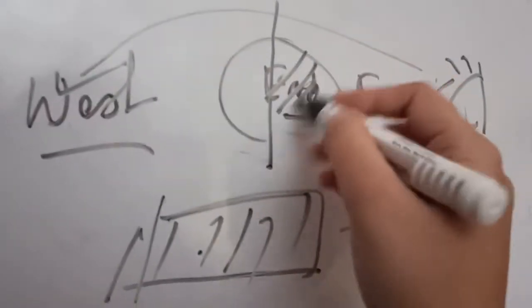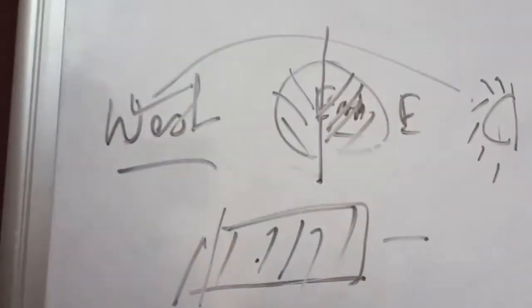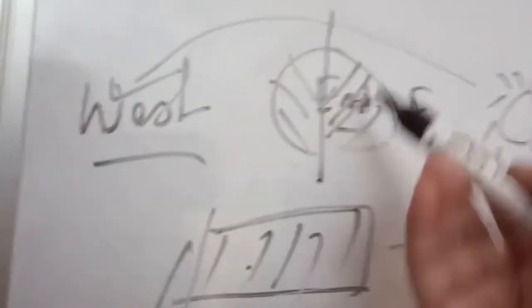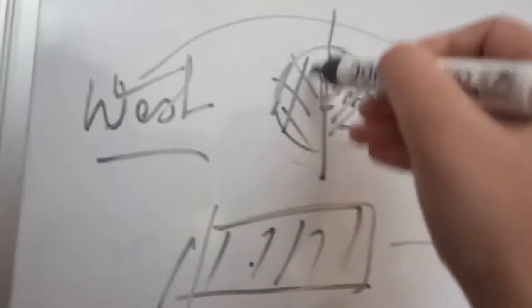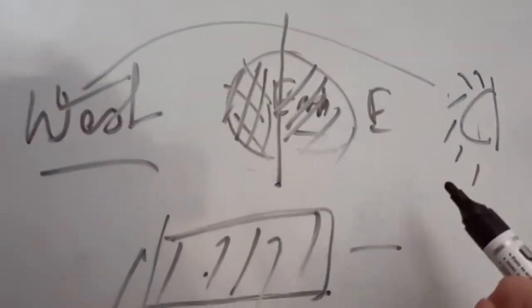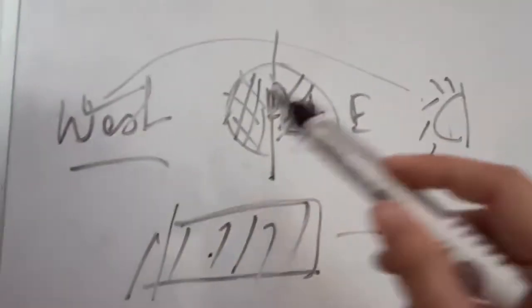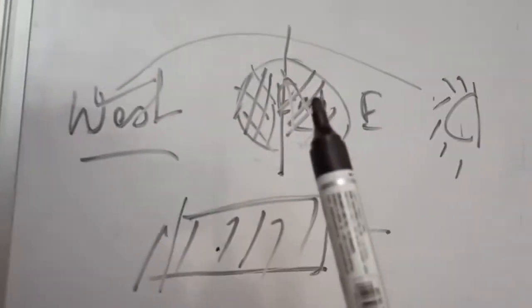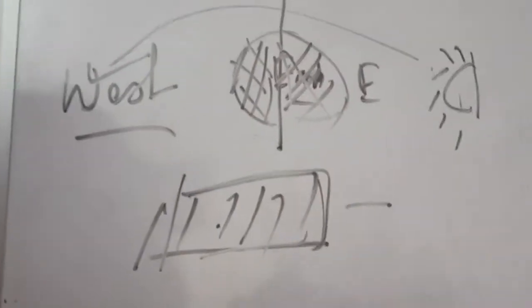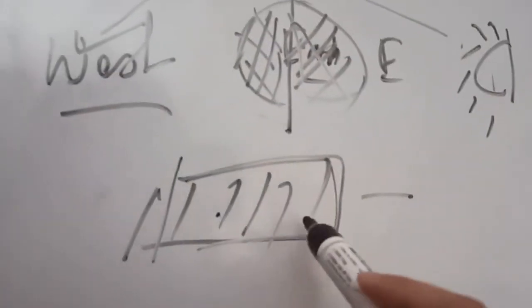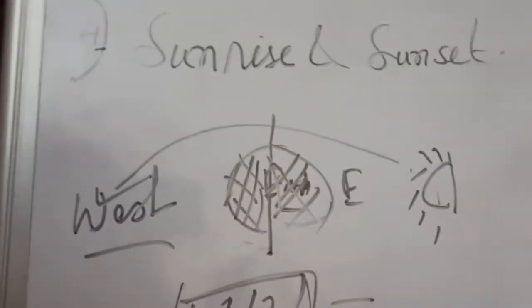But when we get sunrise in the eastern half, it is dark in the western half. And when it is sunlight in the western half, we get darkness in the eastern half. From these proofs, the Earth is spherical in shape, not a flat surface. If it had been a flat surface, all places on Earth would have gotten the sun's rays and sunset at the same time.